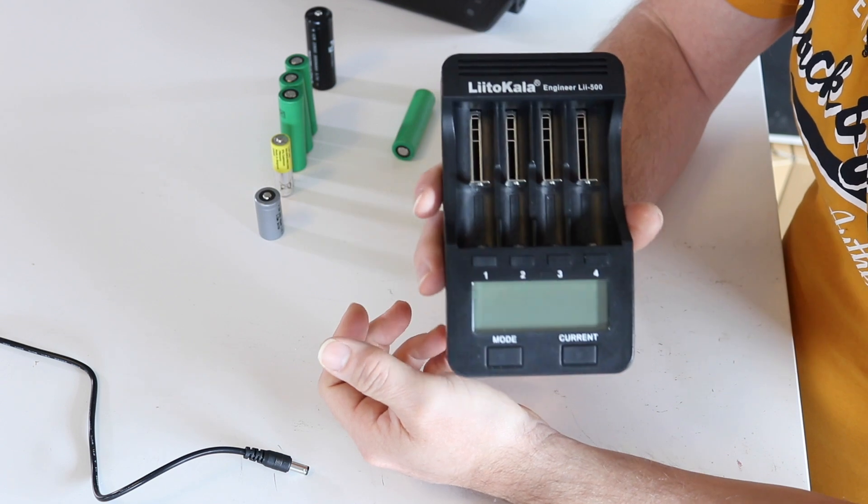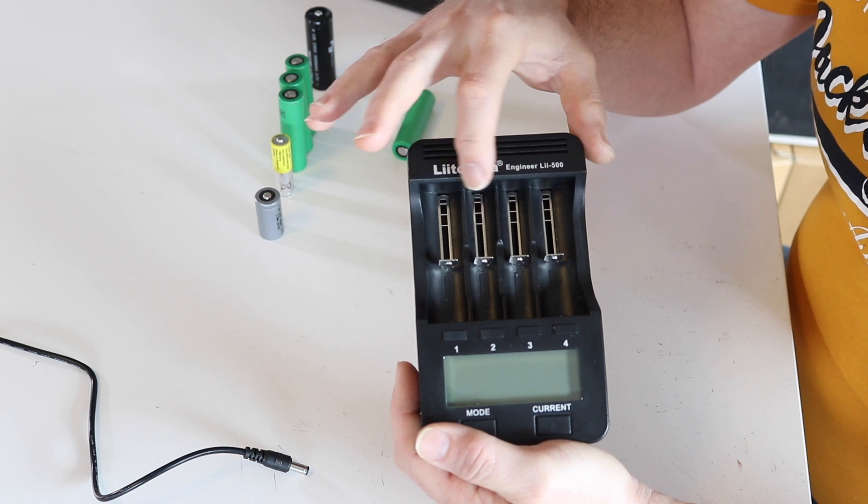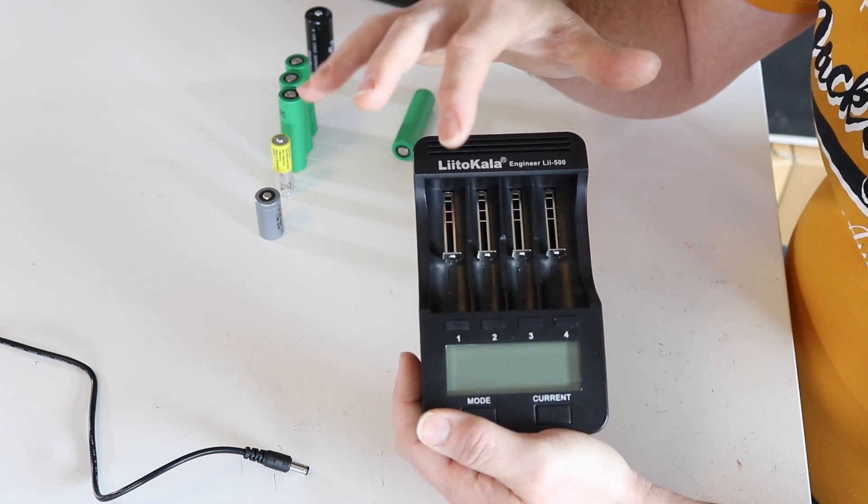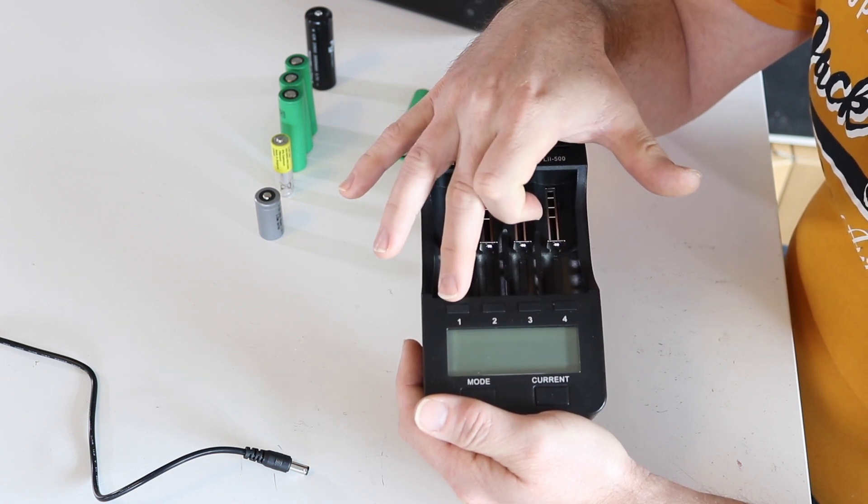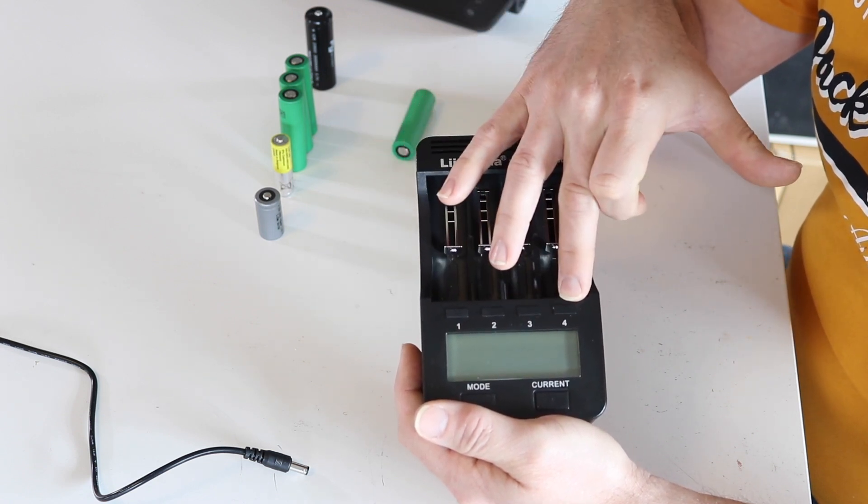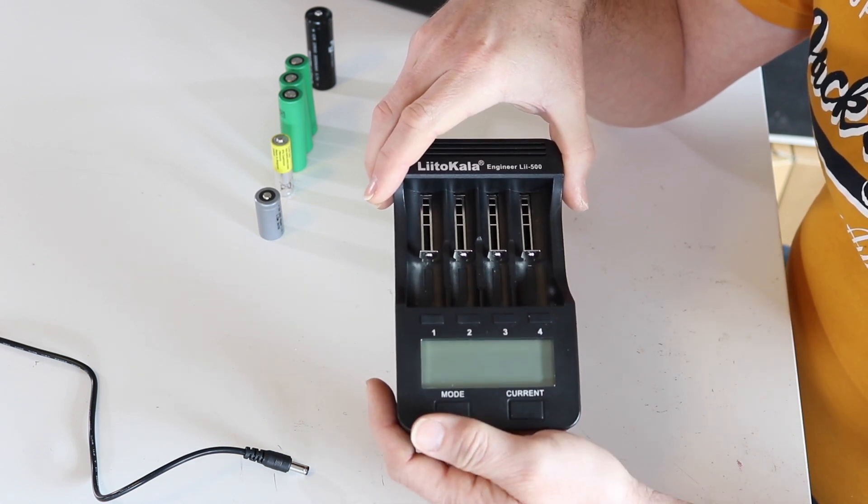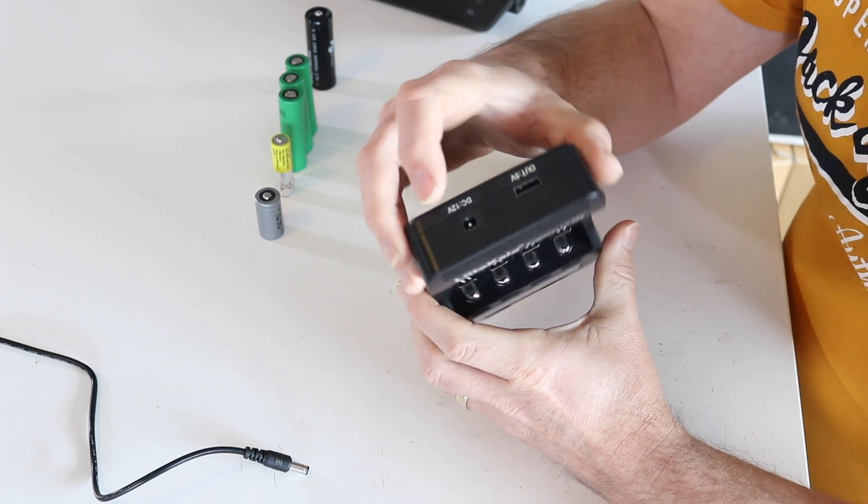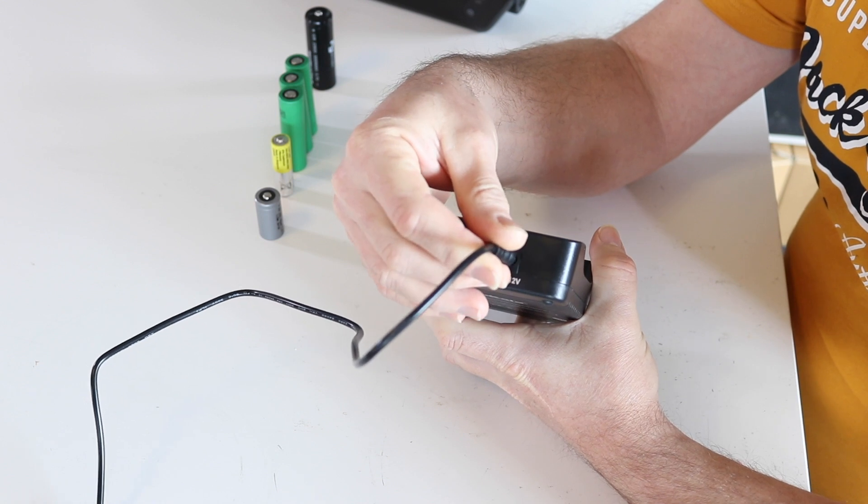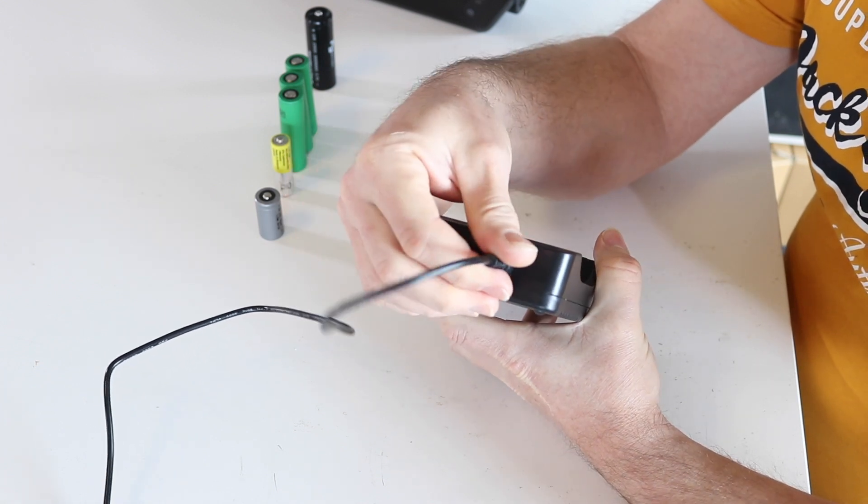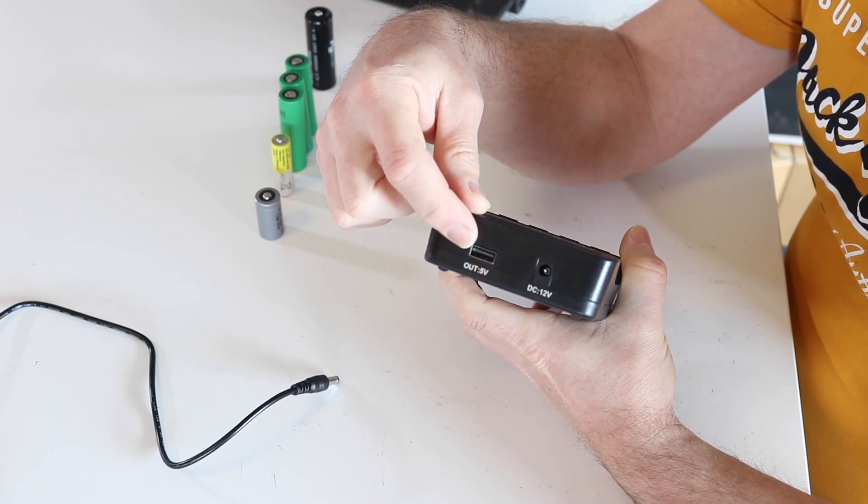Let's have a closer look at the charger. As you can see, we have four slots, we have an LCD screen, we have four buttons on this side, two main buttons on the lower side. Here we have the connector for the 12-volt DC, and we also have a 5-volt USB output.